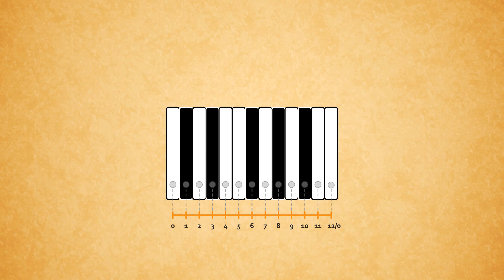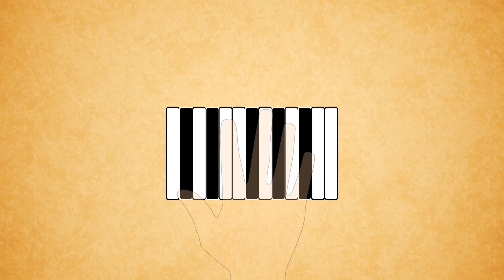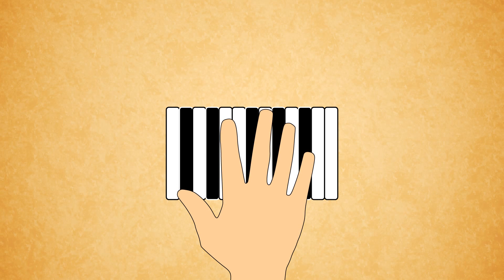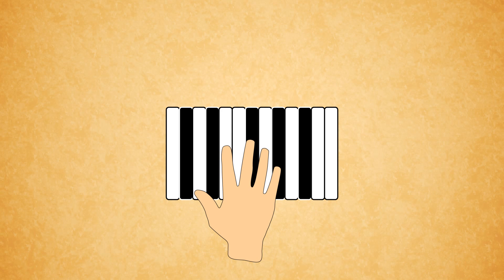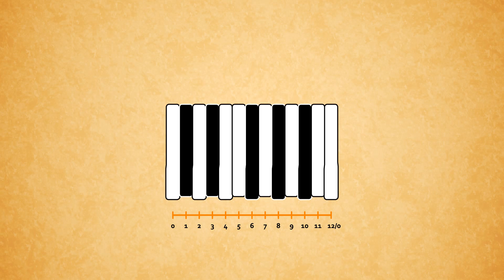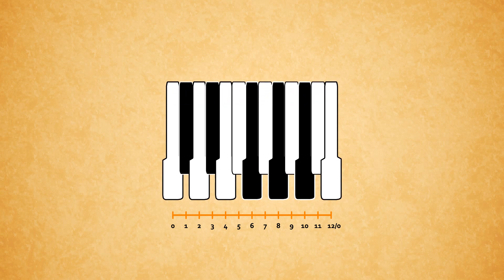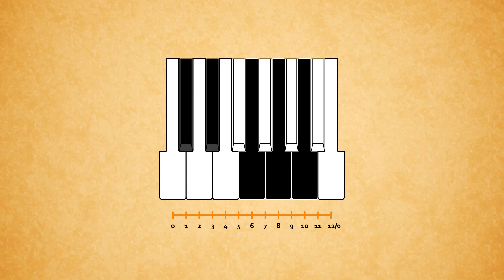The problem with this setup is that the keys are too small for the human hand, or if built bigger, the distance between tones is too great. This challenge can be overcome by raising every second key, allowing the lower keys to double their width. Keys are still regularly arranged, and the distance between any two consecutive keys is still the same.